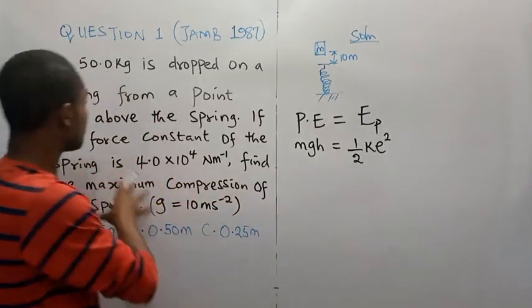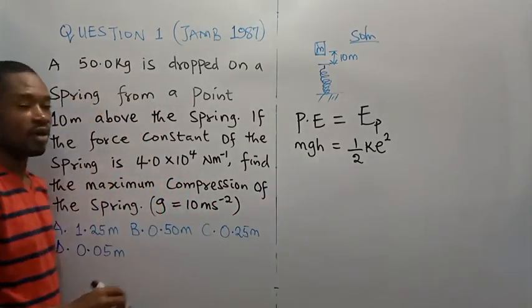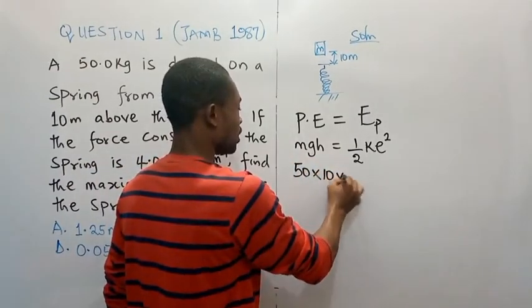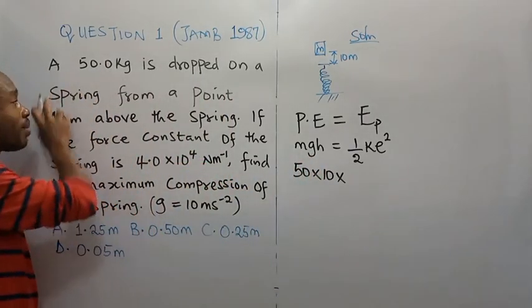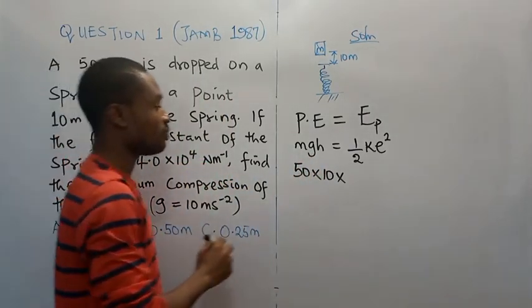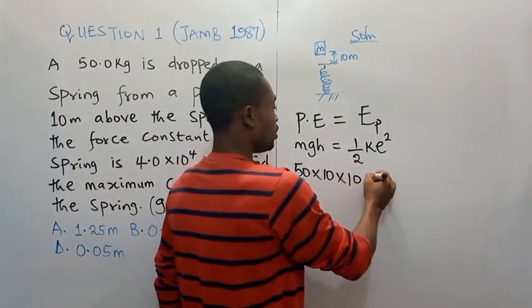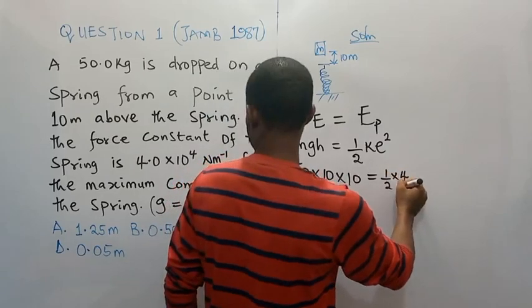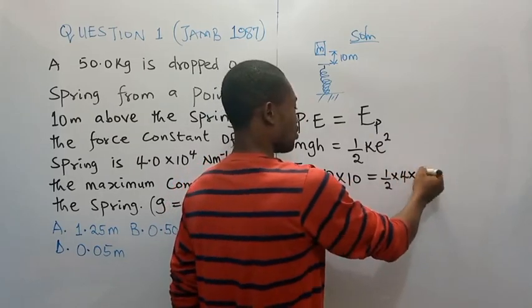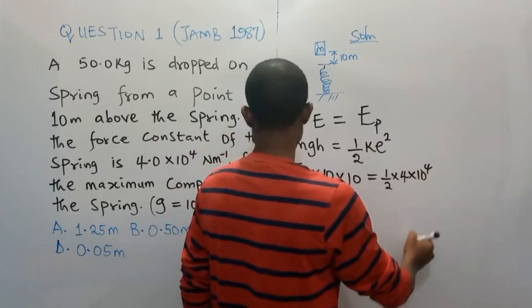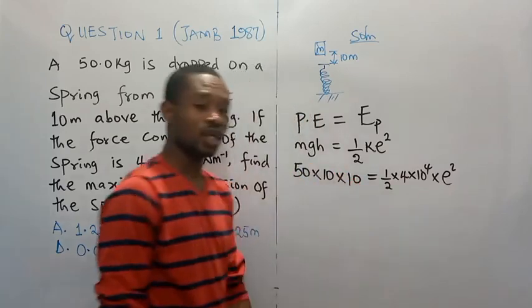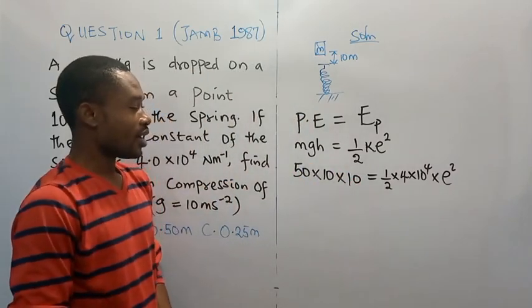The mass given to us is 50 kilograms. All you have to do is substitute 50 times acceleration due to gravity is 10. Then, the height from which the mass was released is 10 meter. So, this is going to be times 10. Then, equal to 1 over 2. The force constant is given as 4.0, which is same as 4 times 10 to the power of 4. Then, that's going to be multiplied by the square of the compression, which we don't know.